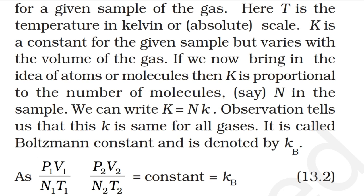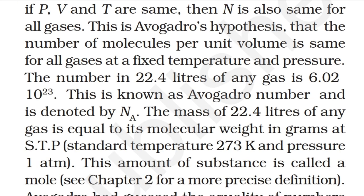Observations tell us that this kB is the same for all gases — it is called the Boltzmann constant, denoted kB. We have: P1V1/(N1T1) = P2V2/(N2T2) = kB. If P, V, T are the same, then N is also the same for all gases — this is Avogadro's hypothesis that the number of molecules per unit volume is the same for all gases at a fixed temperature and pressure. The number in 22.4 liters of any gas is 6.02 × 10²³, known as Avogadro's number, denoted NA.